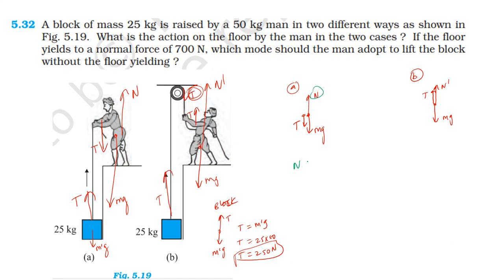The downward force is T plus Mg. T is 250 N (weight of block), M is 50 kg, so 50 into g (10) equals 500. Total: 500 plus 250 equals 750 N. The floor experiences 750 N, which exceeds the 700 N limit.